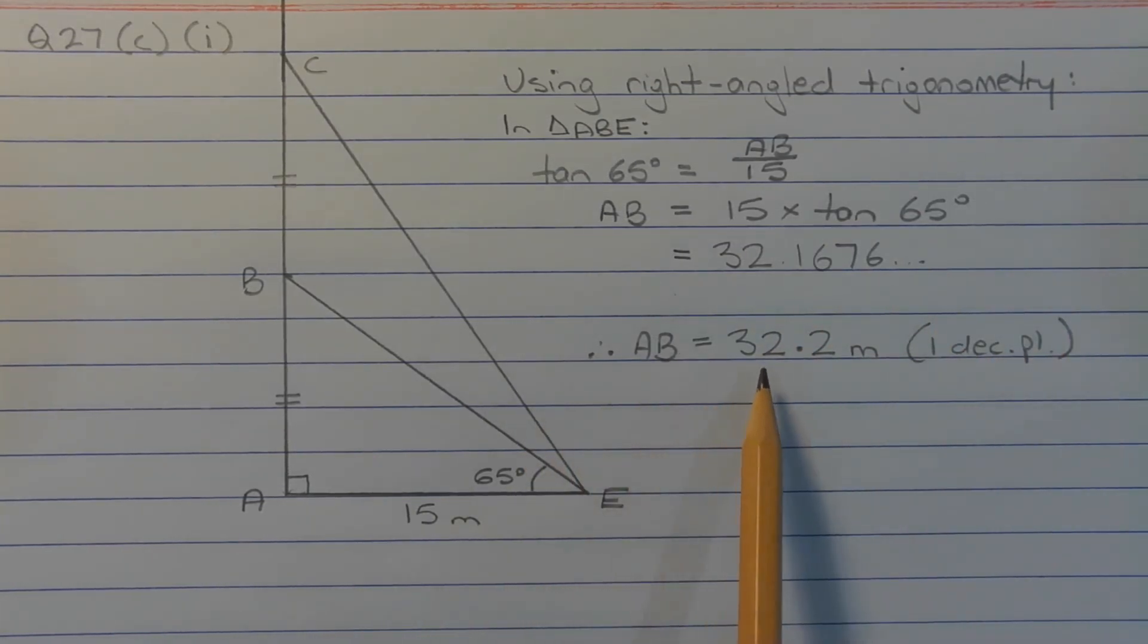Therefore, AB equals 32.2 meters, correct to one decimal place.